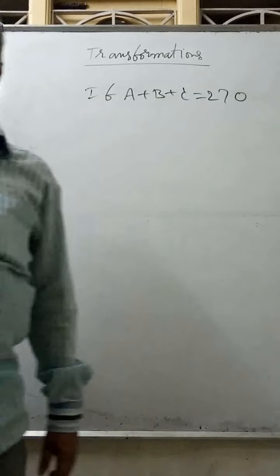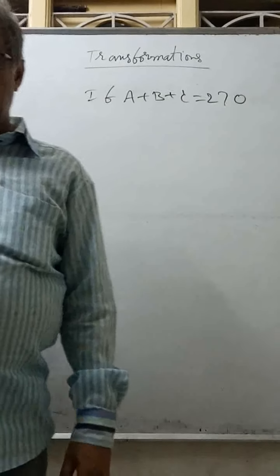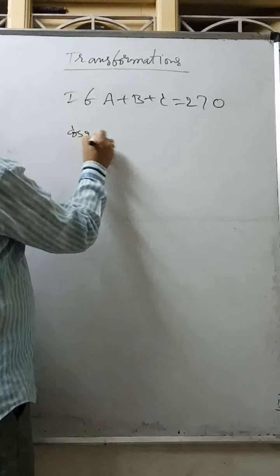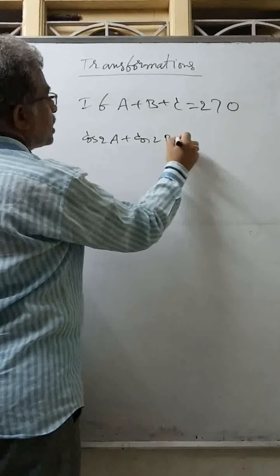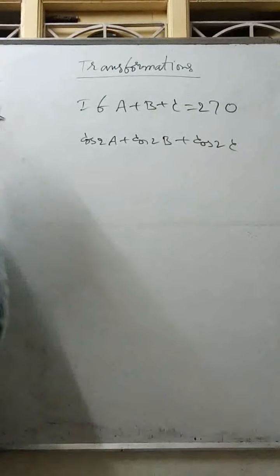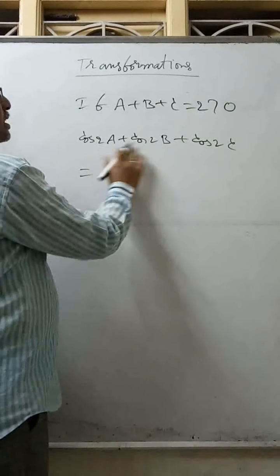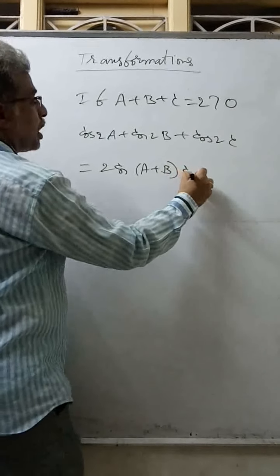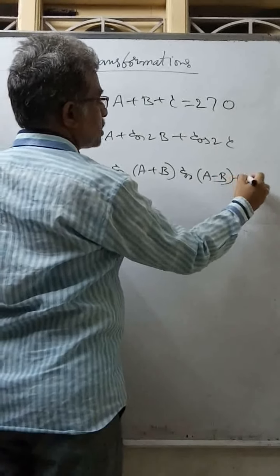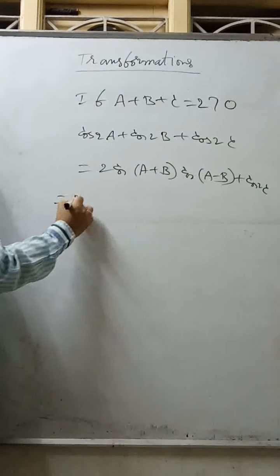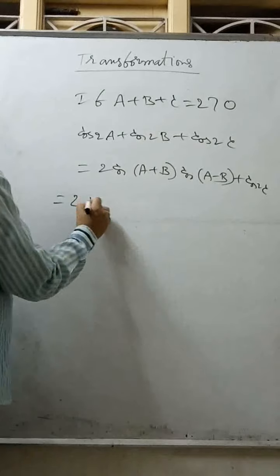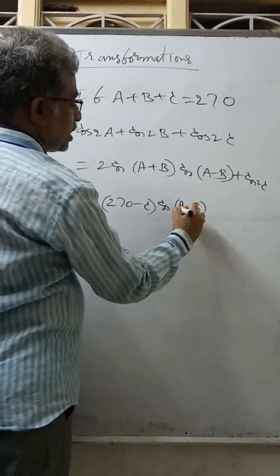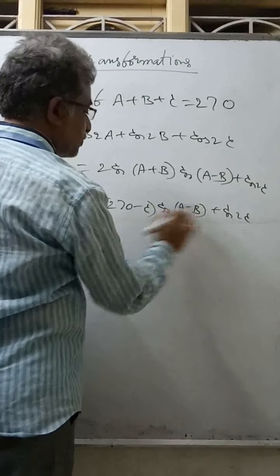Now proving: if A plus B plus C equals 270 degrees, find cos 2A plus cos 2B plus cos 2C. Using cos C plus cos D formula: 2 cos((C+D)/2) cos((C-D)/2) plus cos 2C. Here A+B = 270-C, so cos((A+B+... )/2) = cos((270-C)/2+...). Cos(270-C) is in the 3rd quadrant, cos is negative but becomes sine: so this gives minus 2 sin C cos(A-B) plus cos 2C.